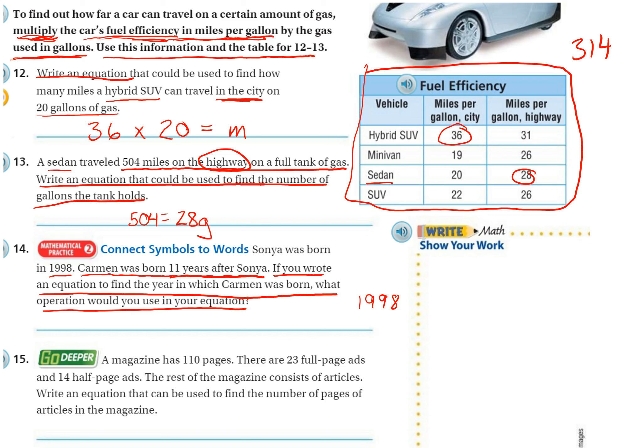We were trying to find out Carmen. Let's think about this one. So there must be more than one way to do this. The way I would do this one is I would take 1998, which is the year Sonia was born, and since Carmen is after Sonia, it would be add 11 years to that, and that would tell you when Sonia was born. So 2009.